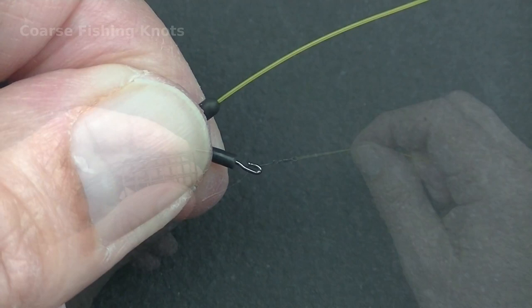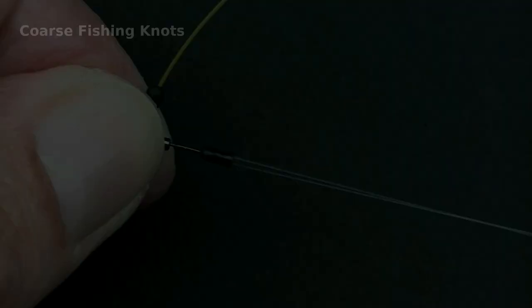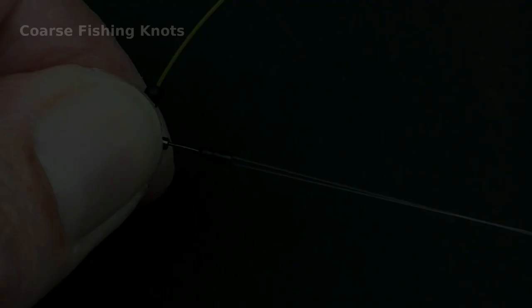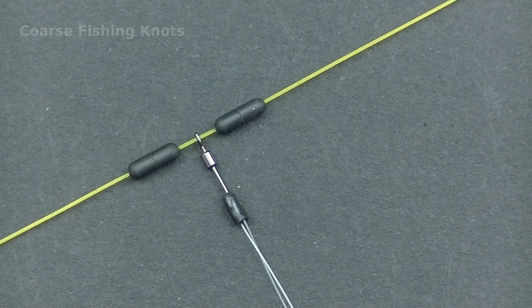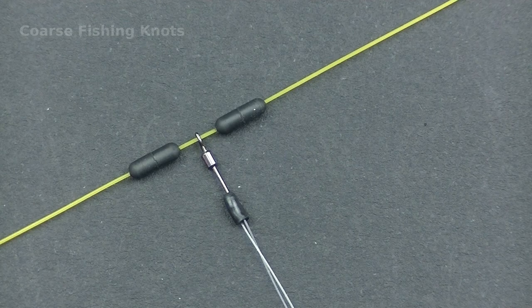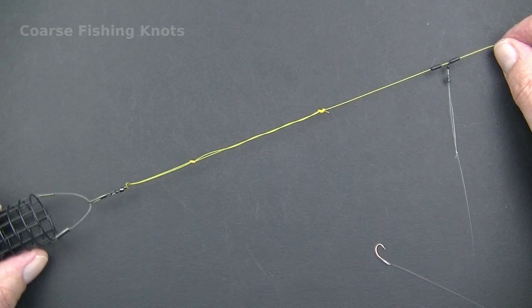Next, clip on the feeder and lastly attach the hook link to the quick change swivel. Slide the line stops down to between six and eight inches above the feeder. Leave a gap between the two line stops to allow the hook link swivel to freely rotate on the line. This allows the hook link to helicopter on casting rather than wrapping around the main line.